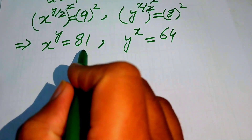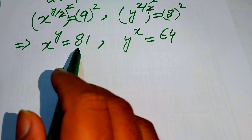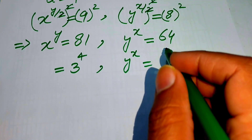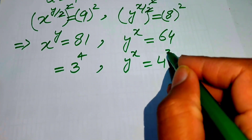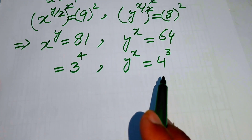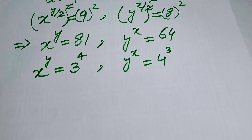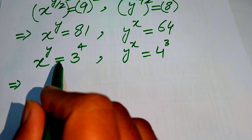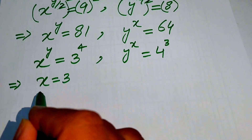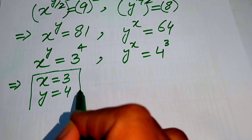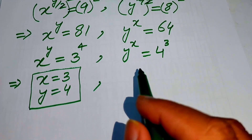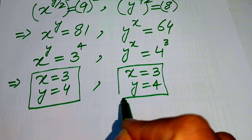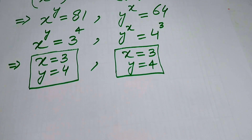We focus on the right hand side of both cases. We write 81 as 3 to the power of 4. Similarly, 64 can be written as 4 to the power of 3, since 4 to the power of 3 equals 64. Comparing both sides in each case, x to the power of y equals 3 to the power of 4 gives x equals 3 and y equals 4. Comparing y to the power of x equals 4 to the power of 3 again gives x equals 3 and y equals 4.